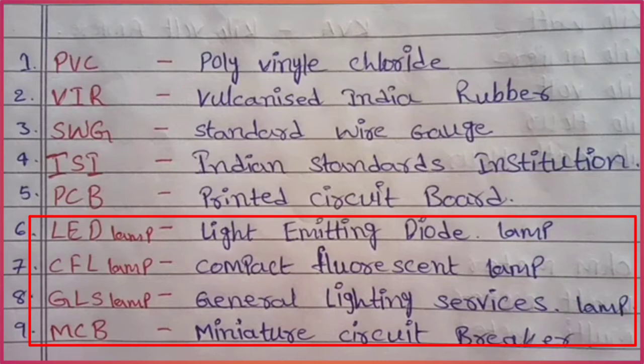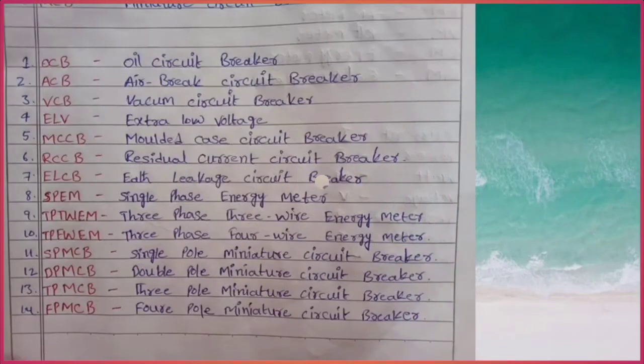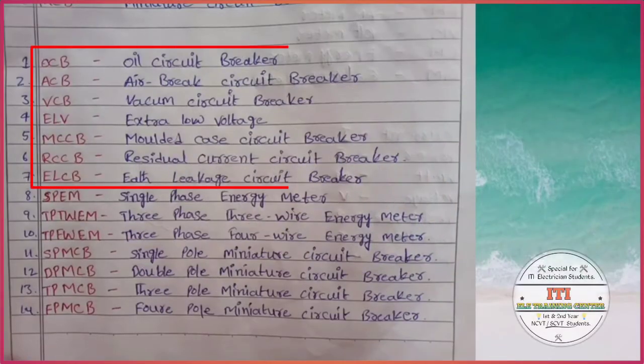MCB: miniature circuit breaker. OCB: oil circuit breaker. ACB: air brake circuit breaker. VCB: vacuum circuit breaker.